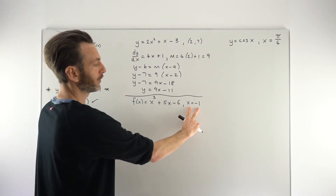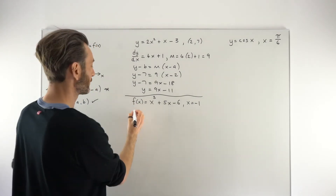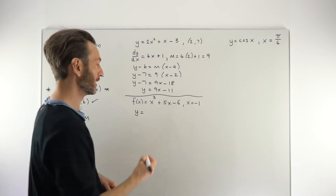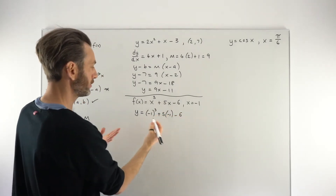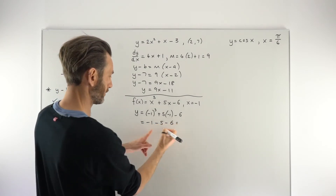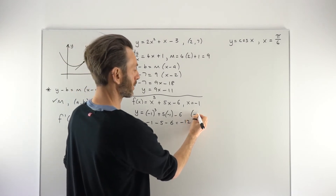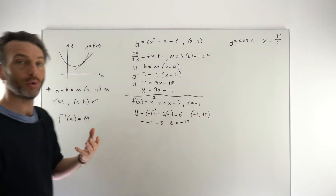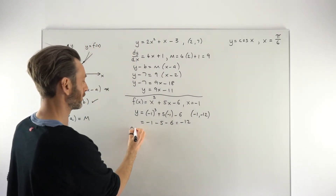In the next example we've only got the x-coordinate of the point of tangency, so we need to find the y-coordinate as well. Since f(x) and y are interchangeable, we just plug x = -1 into the formula: minus 1 cubed plus 5 times minus 1 minus 6. Minus 1 cubed is minus 1, this gives minus 5, minus 6, and that all comes to negative 12. So the full coordinate of the point of tangency is (-1, -12).